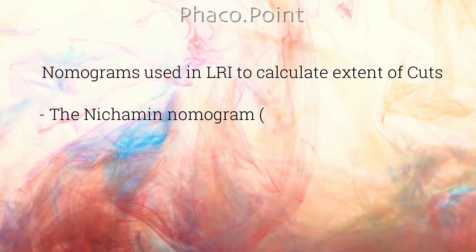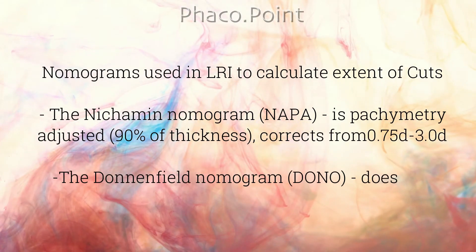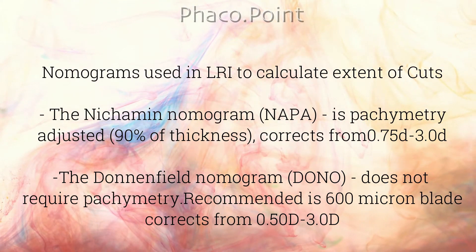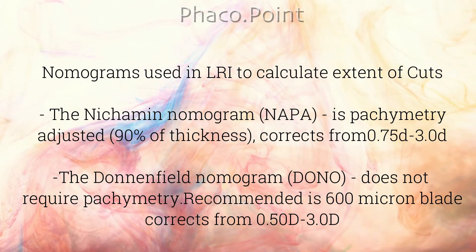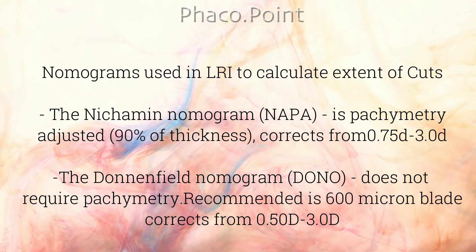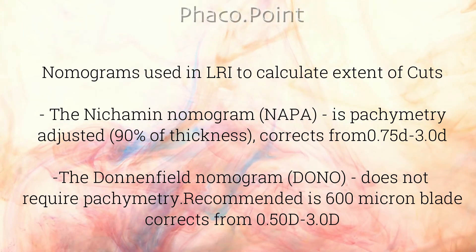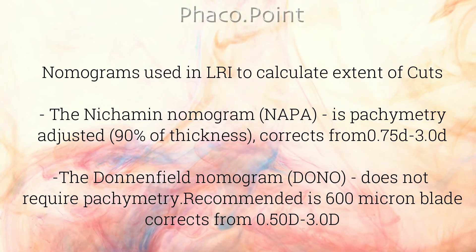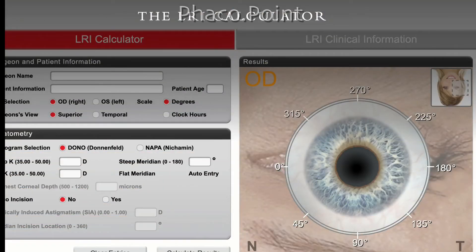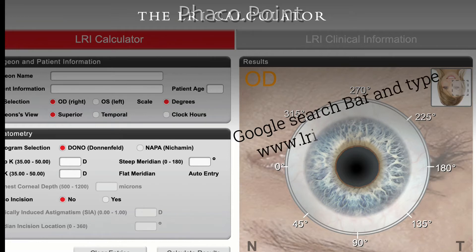There are two nomograms most widely used to calculate the amount of correction for limbal relaxing incisions: the Nichamin Nomogram and the Donnenfeld Nomogram. The Nichamin Nomogram requires measurement of peripheral corneal thickness; if you do not have access to it, you can use the Donnenfeld Nomogram, which recommends performing LRI with 600-micron guarded depth blades. It is actually very simple to calculate the correction using the LRI calculator, which can be easily accessed by typing it in the Google search bar. This site is a free-use site maintained by a Johnson & Johnson company.